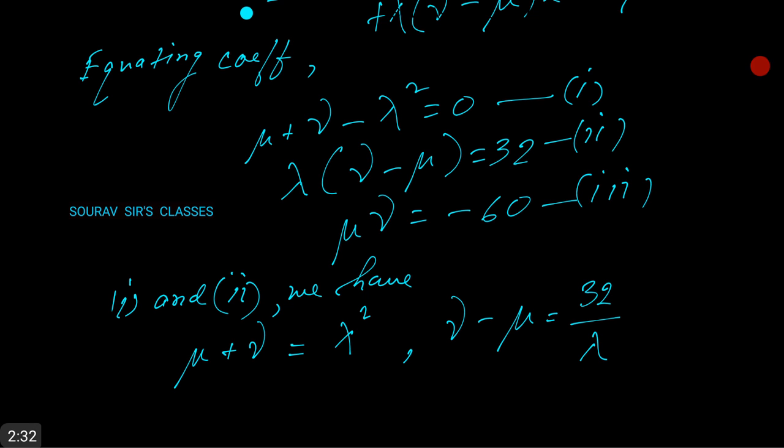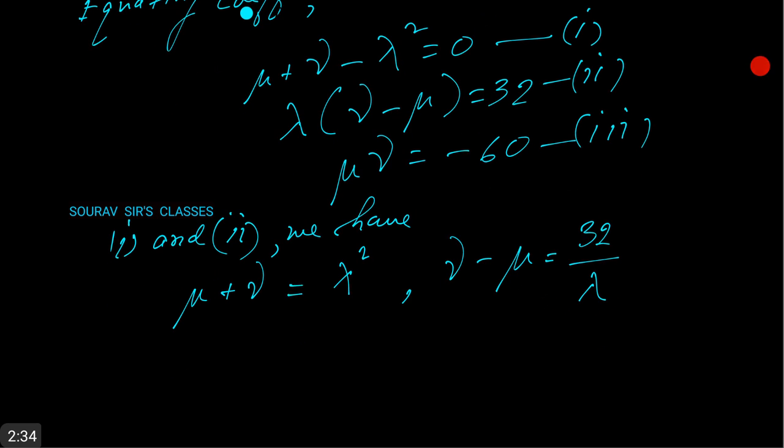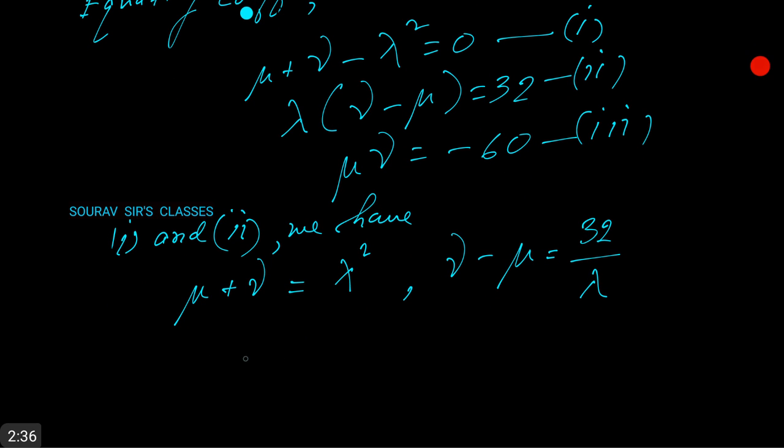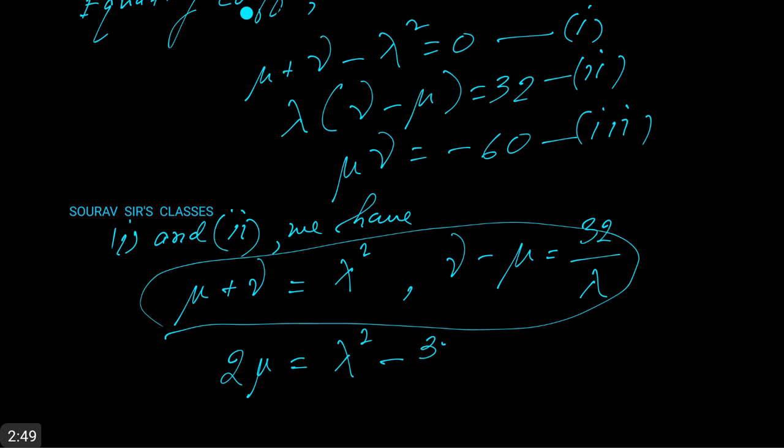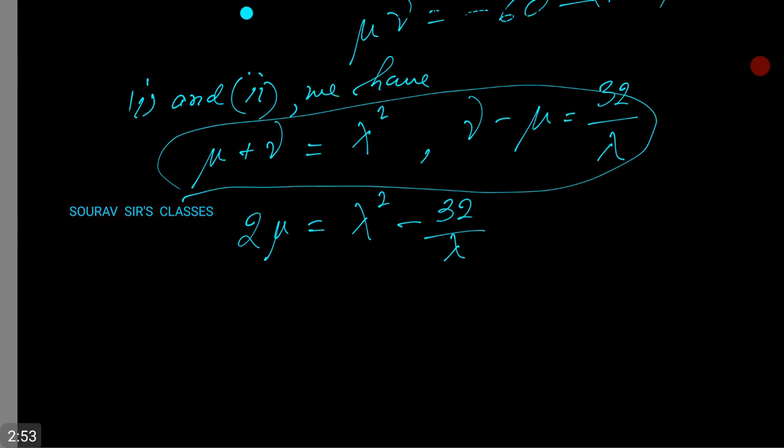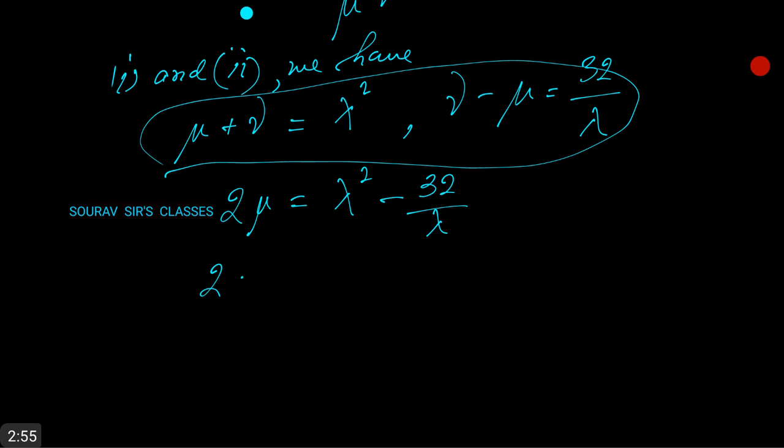From the above we can say that solving this, we have 2 mu is equal to lambda squared minus 32 by lambda, and 2 nu is equal to lambda squared plus 32 by lambda.